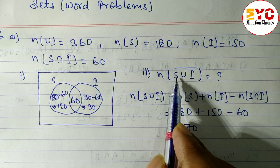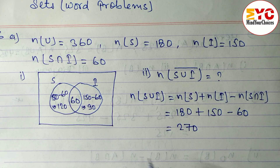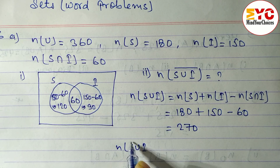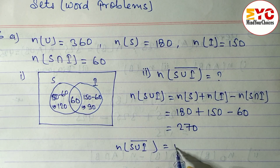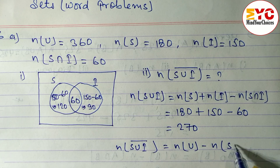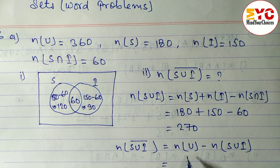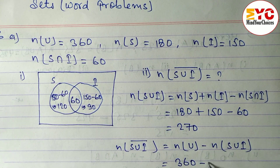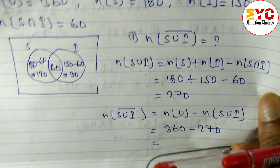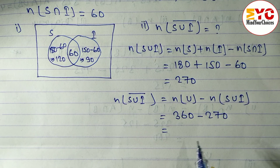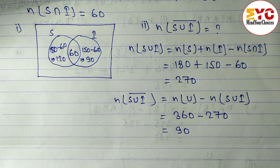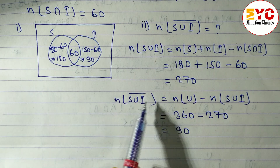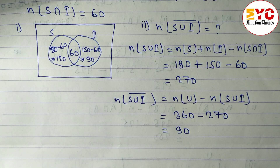Now we have to find the number of students who use neither Samsung nor iPhone — that is n(S∪I) complement. The formula is n(U) − n(S∪I). n(U) = 360, n(S∪I) = 270, so 360 − 270 = 90. It means 90 students did not use Samsung as well as iPhone — neither of them. Hope you understand question number 6a.